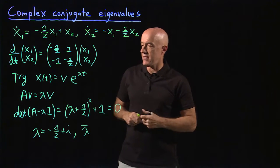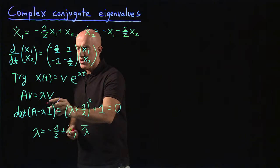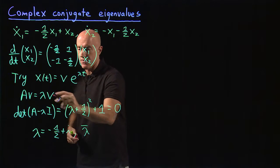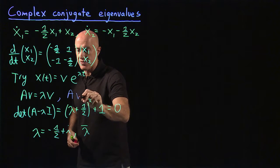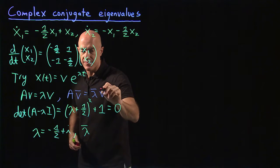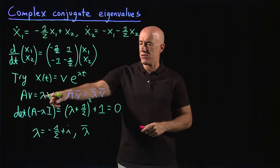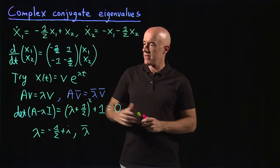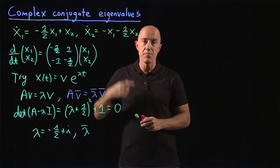You can see that from the eigenvalue equation. If A is a real matrix and we take the complex conjugate of both sides, we get A times v̄ equals λ̄ times v̄. This means that if λ is an eigenvalue, then so is λ̄, the complex conjugate of λ. And if v is an eigenvector, then so is v̄.